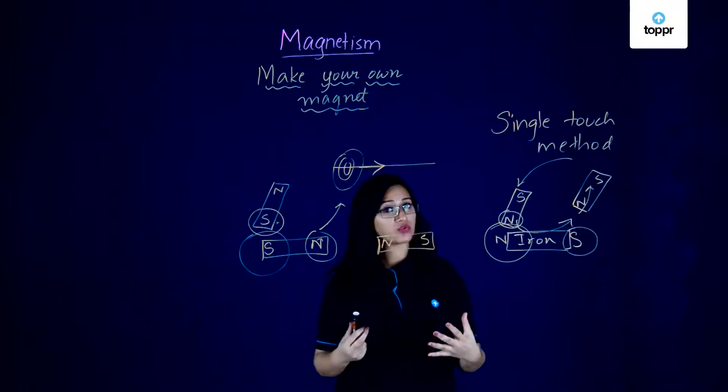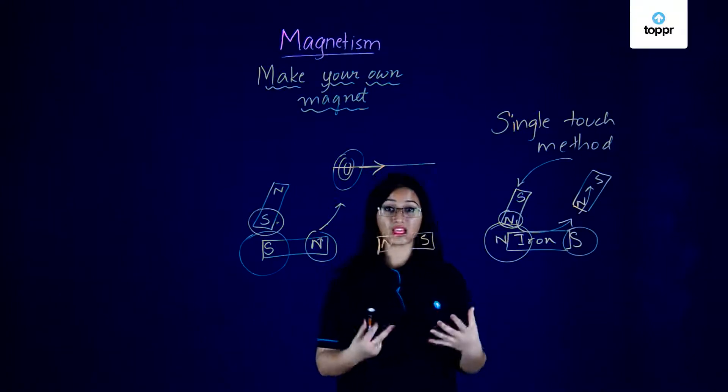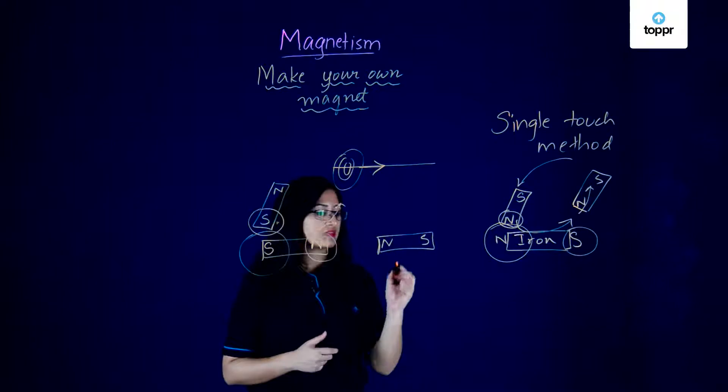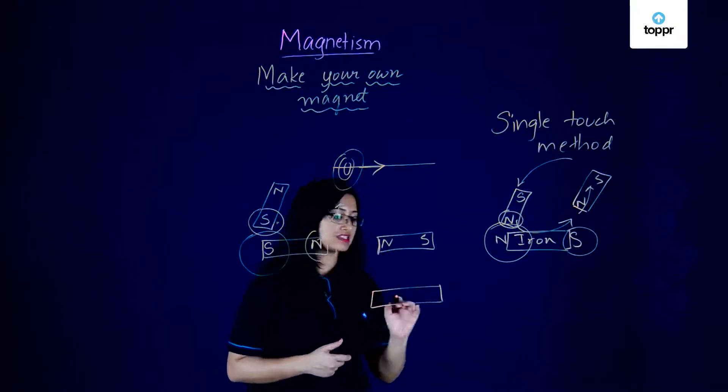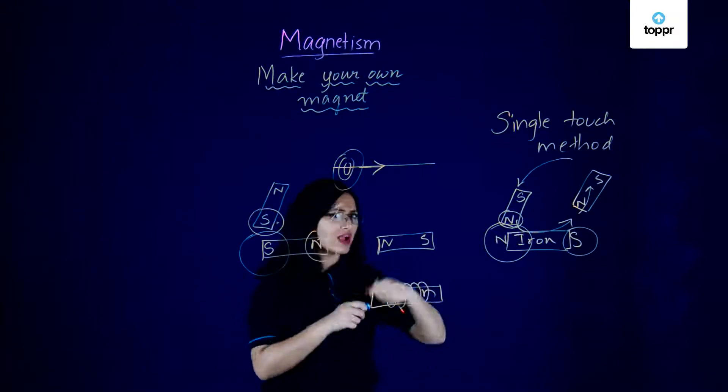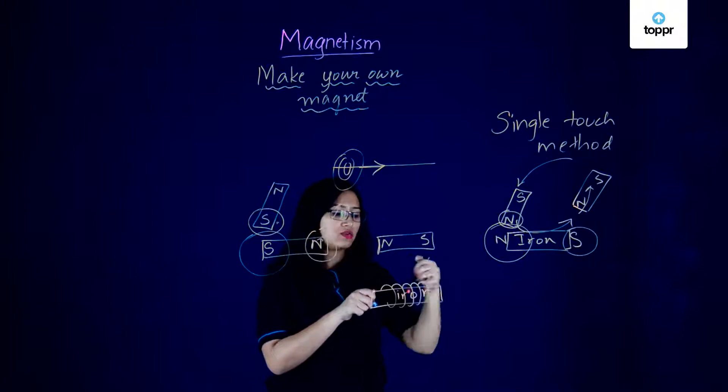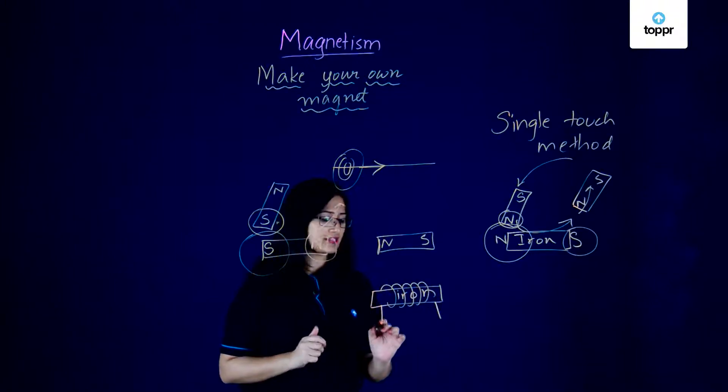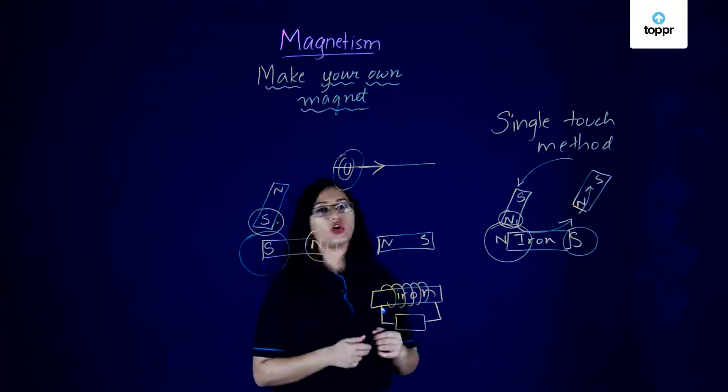So all you have to do using electricity to create a magnet is to take the substance that you want to magnetize. Let's say we have again an iron bar. You have to wrap a coil of wire around quite a few times, wrap it around and take the ends of the wire and you connect it up to a battery or a power source.